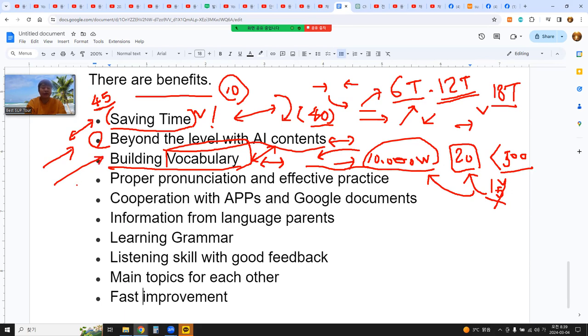But when you start building vocabulary, you can also get proper pronunciation and it will be effective practice. While you're learning the vocabulary, the normal method, the common method is just memorizing vocabulary without the pronunciation. But when we study together, we have how to pronounce and we can listen and we can repeat, then proper pronunciation and effective practice with the sound.